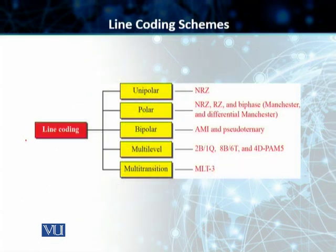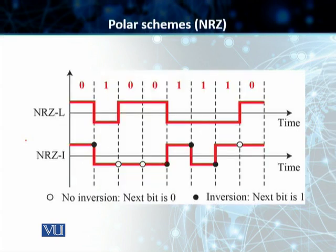Once again, five distinct categories. We discussed unipolar NRZ, we also spoke about the polar NRZ and we saw that there are two different variants: NRZ-L and NRZ-I. We discussed both NRZ-L and NRZ-I.